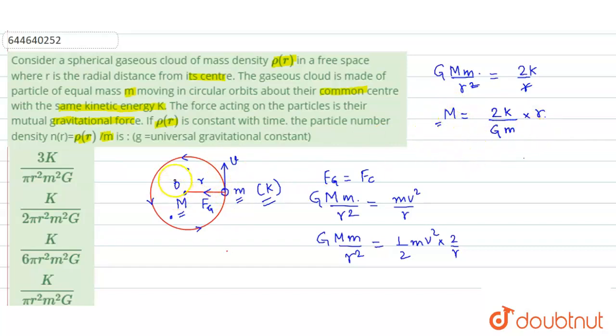Now if we take an elemental sphere around this gaseous cloud, so its mass will be simply dM, this will be simply equals to 2k over G small m times dr. So this will be the elemental mass if we take an element here.